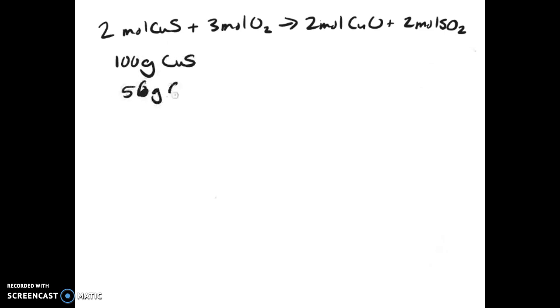But let's do a quick example from the textbook where the equation is: 2 moles of cupric sulfide plus 3 moles of oxygen yields 2 moles of copper oxide and 2 moles of sulfur dioxide. In this case...